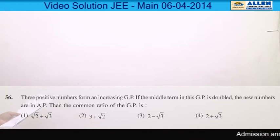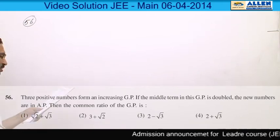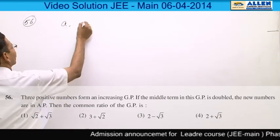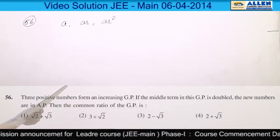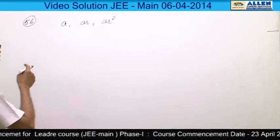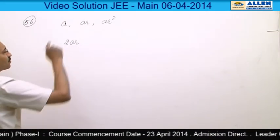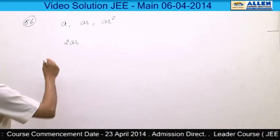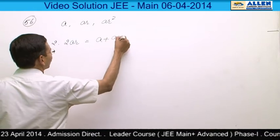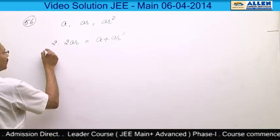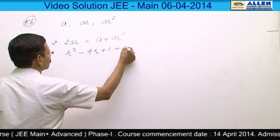Question number 56. There are 3 positive numbers in GP; let the numbers be a, ar, and ar². If we double the middle term — making it 2ar — then these terms will be in arithmetic progression. So 2 × 2ar = a + ar², and cancelling a gives r² − 4r + 1 = 0.